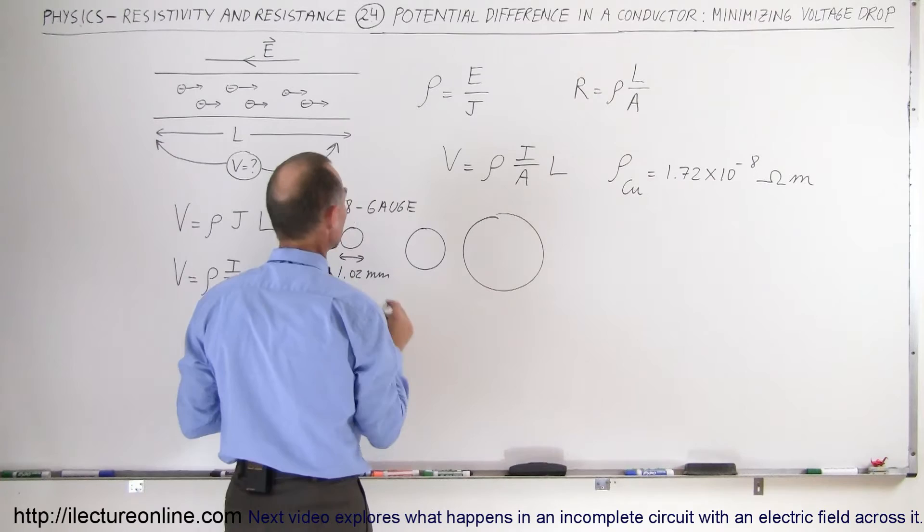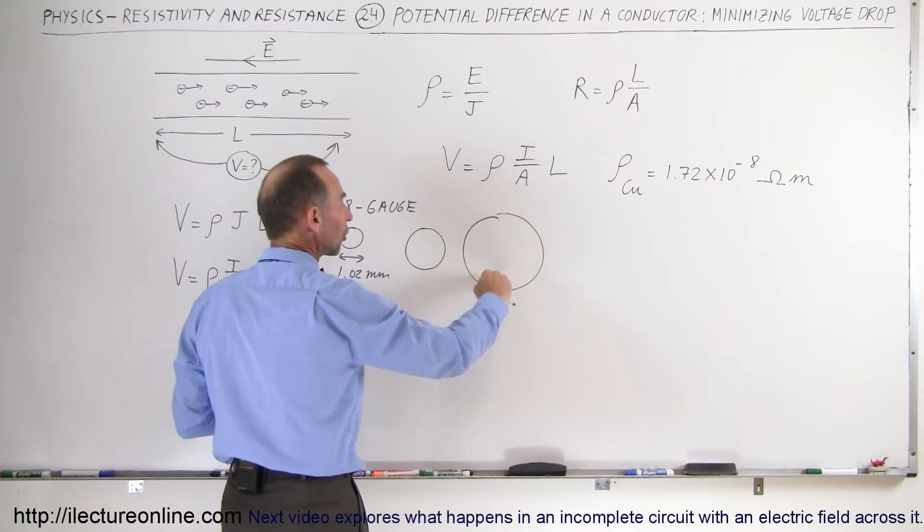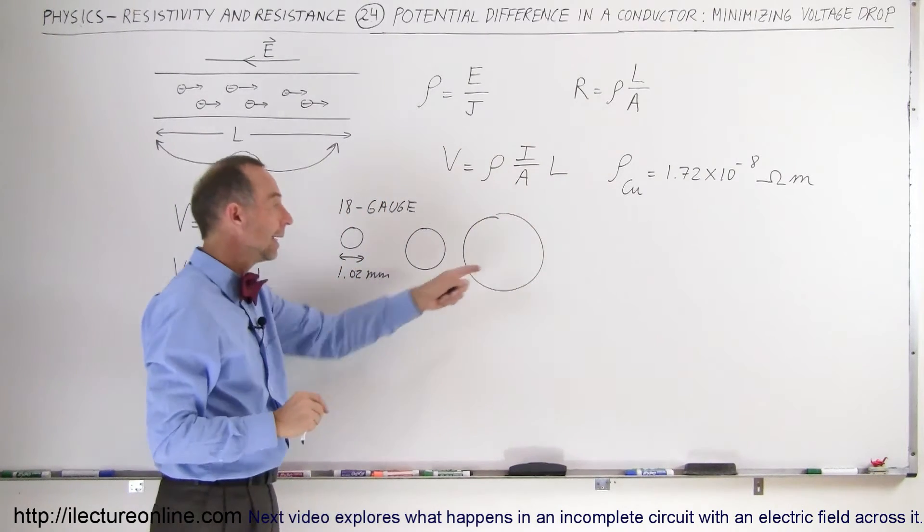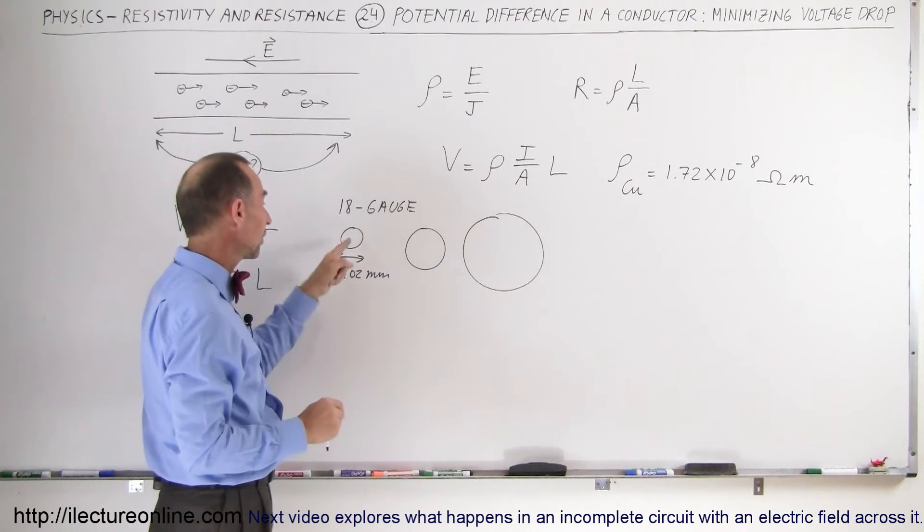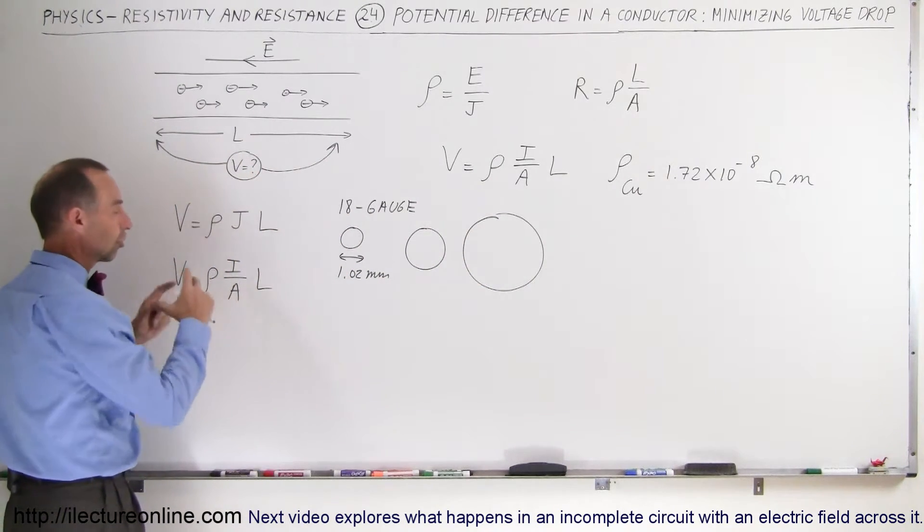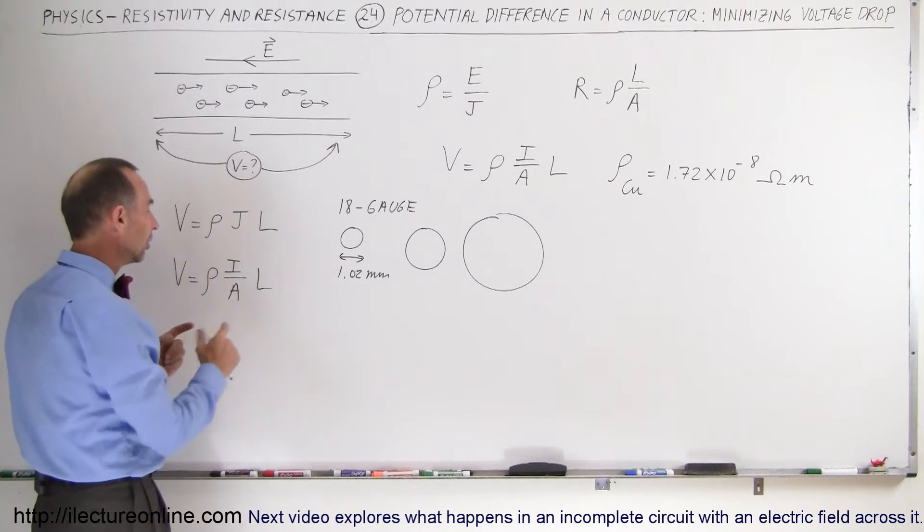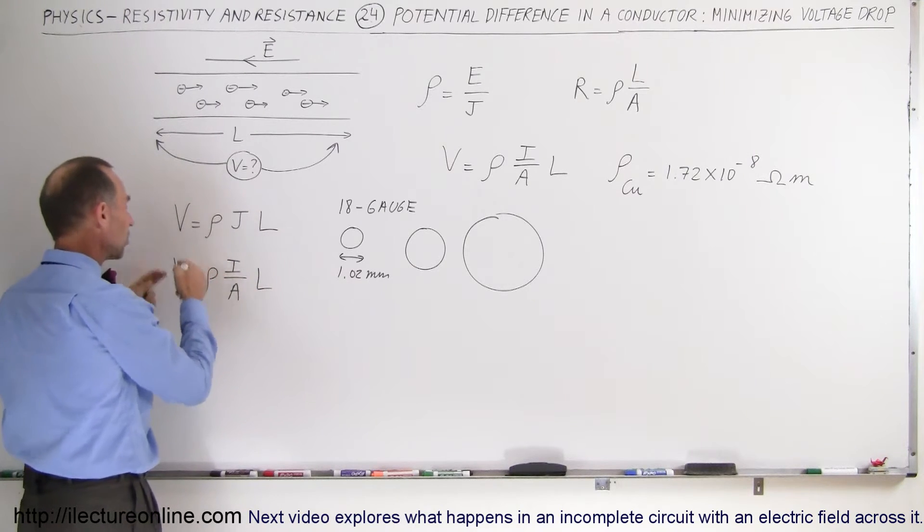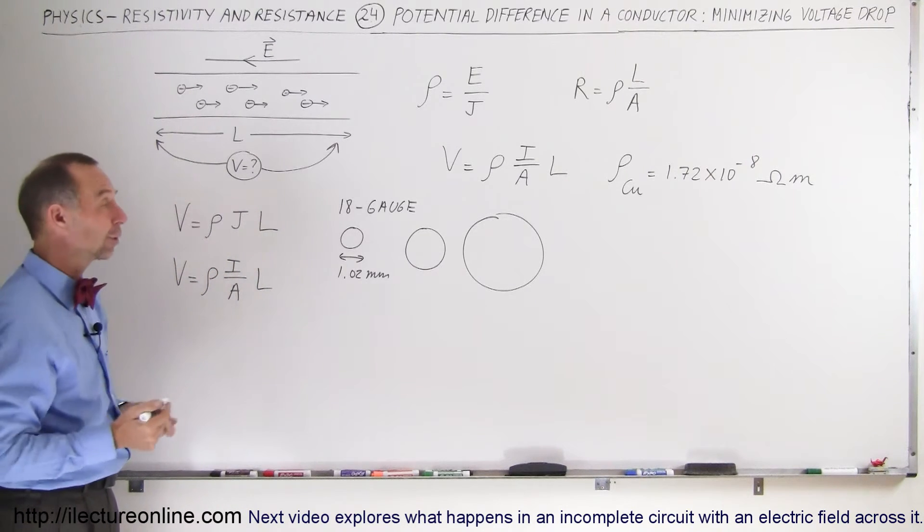You can carry a whole lot more current per unit area in a big conductor like this compared to a conductor like that. So the idea is to make the conductor as large as possible in cross-sectional area, so with the same amount of current, we have a much lower voltage drop. That's the only control that we have.